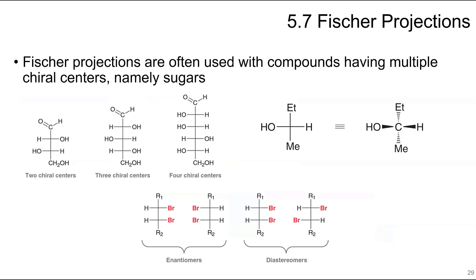Fischer projections are used sometimes with compounds that have multiple chiral centers, mostly in sugars. This compound here has 2 chiral centers, this one has 3, this has 4. What this drawing means is that when you have these flat here, it's like having these two groups pointing back and these two coming at you. You can see the enantiomers here, they're mirror images of each other, and these are diastereomers of each other.